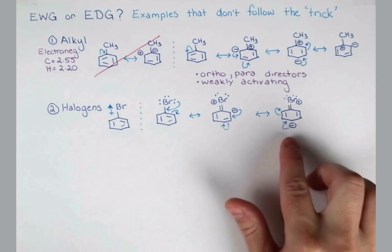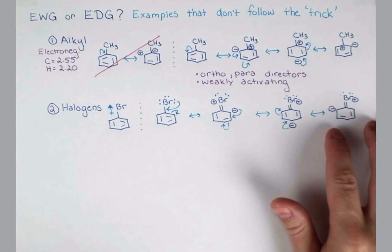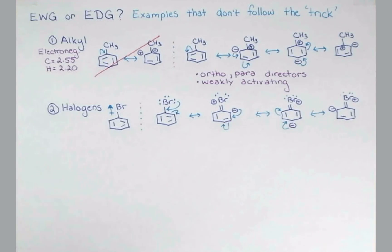Finally, we can draw arrow pushing to show one more structure with a negative charge at the ortho position. So the halogens are also ortho para directors.